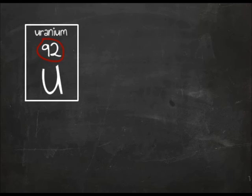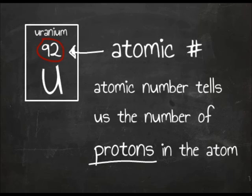The 92 in uranium is the atomic number. The atomic number tells us the number of protons that are present in the atom.